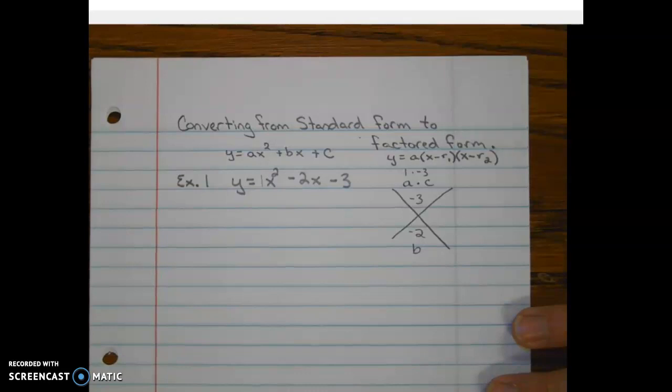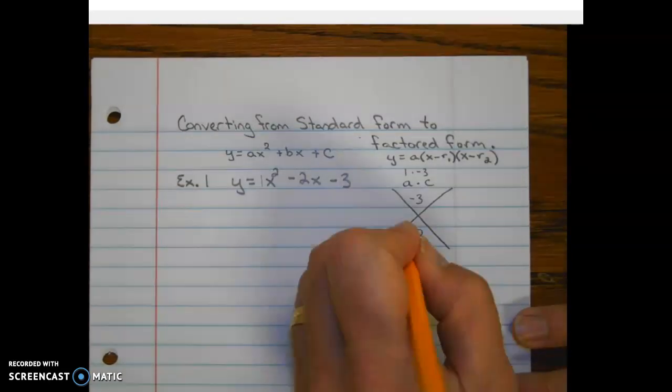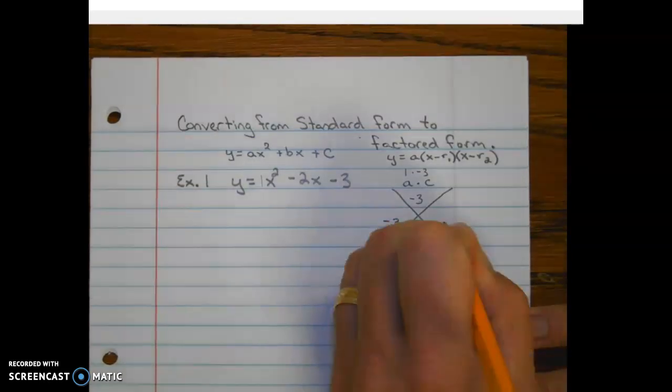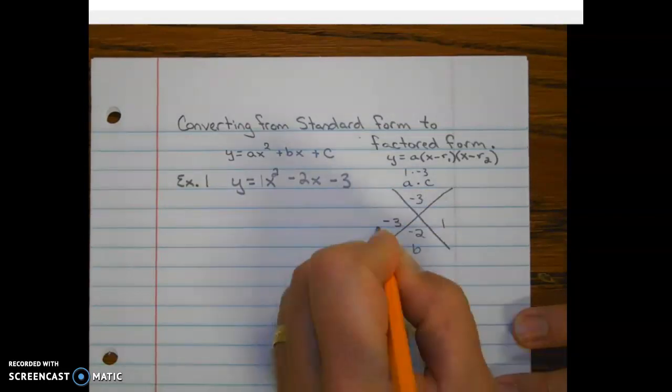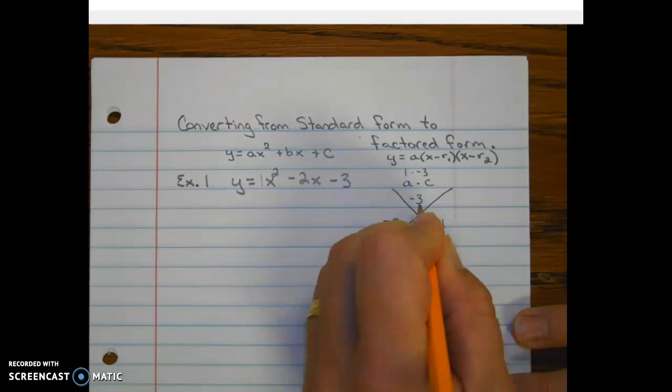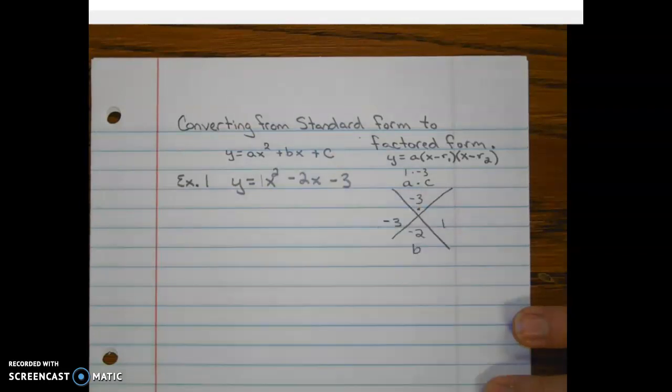So after a little bit of thinking, we should have come up with negative 3. They multiply and they add. Negative 3 times 1 is negative 3. So they have to multiply to give us the top number.